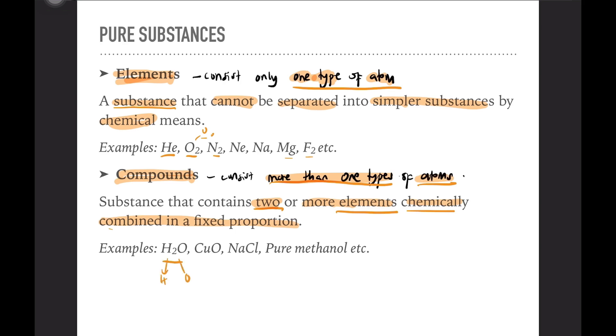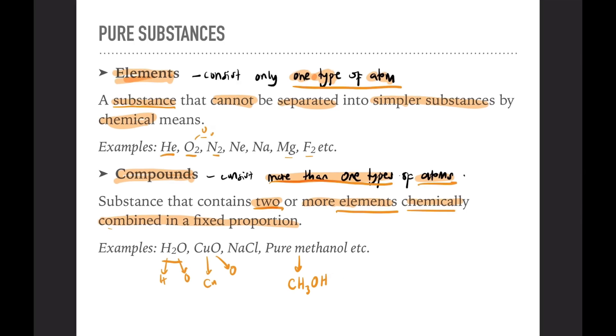For example, like H2O. We have H and O. CuO has Cu and O. NaCl has Na and Cl. And pure methanol, its formula is actually CH3OH. So there are more than one type of atoms.